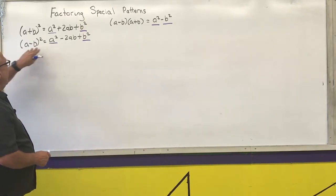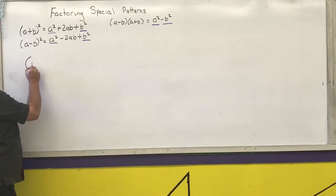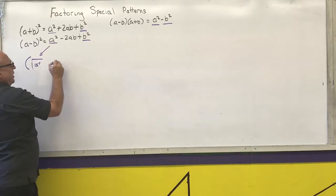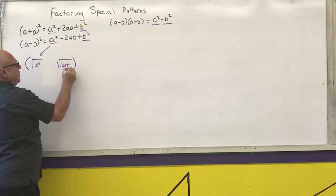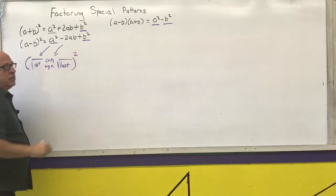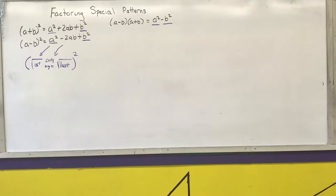So going from the expanded form back to the factored form, the rule is: you're going to take the square root of the first, the square root of the last, copy the sign, all squared. That's the general pattern for a perfect square trinomial.